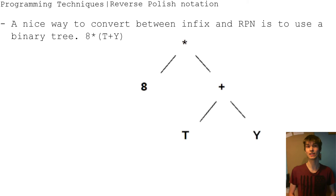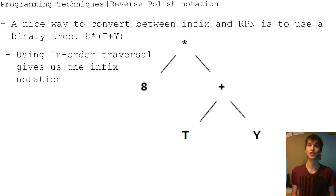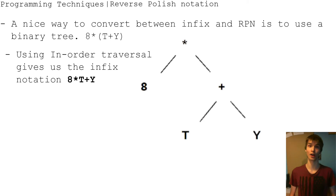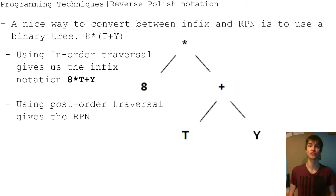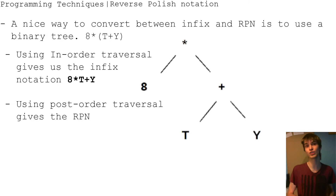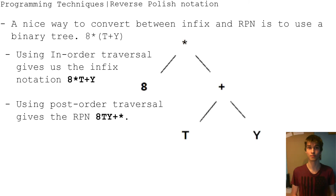To get the information back out, using in-order traversal gives us the infix notation — so that gives us 8 times t plus y. Using post-order traversal gives the Reverse Polish Notation. To get the reverse Polish, you use the post-order, which would give you the times at the end.